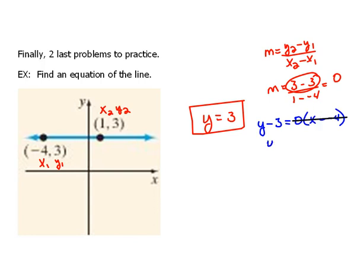So at this point we have y minus 3 equals 0 and if we add 3 to both sides to get y alone, y will equal 3.